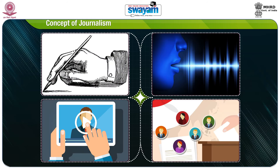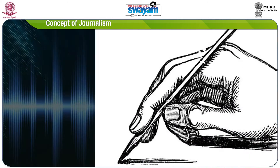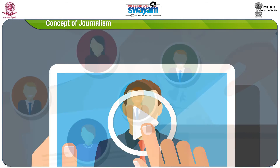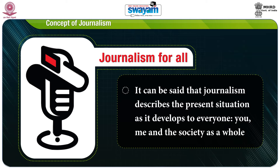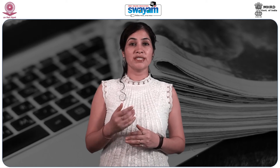In other words, journalism is a way of shaping and delivering information into news content through text, voice, picture or videos, which helps the public to know about contemporaneous incidents and events. It can be said that journalism describes the present situation as it develops to everyone — you, me and the society as a whole. So journalism simply means to provide information to the public.